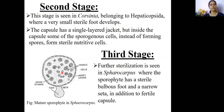The second stage is represented by the genus Corsinia, which belongs to the Hepaticopsida class. Here, in addition to the capsule, a small sterile foot also develops. The capsule has a single-layered jacket with some sporogenous cells, and sterile nutritive cells are also present.